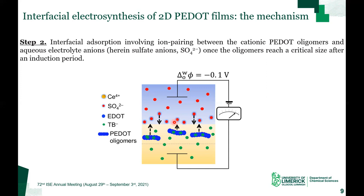The maximum value of the interfacial tension occurs near the potential of zero charge at the ITIES, and this dictates the critical size of the PEDOT oligomers needed to become surface active at ITIES. As the interfacial tension increases, the oligomers that adsorb — their critical size decreases. So if we set the potential slightly negative of the potential of zero charge, this is optimal for oligomer adsorption, ensuring a sufficient concentration of sulfate is present at the liquid-liquid interface for ion pairing, while also allowing us to simultaneously maintain a large interfacial tension. Thus, for optimal interfacial electrosynthesis, the interfacial electron transfer and the oligomer interfacial adsorption steps must take place at different applied potentials, meaning that potentiodynamic electrochemical techniques such as cyclic voltammetry will be favored over potentiostatic techniques.